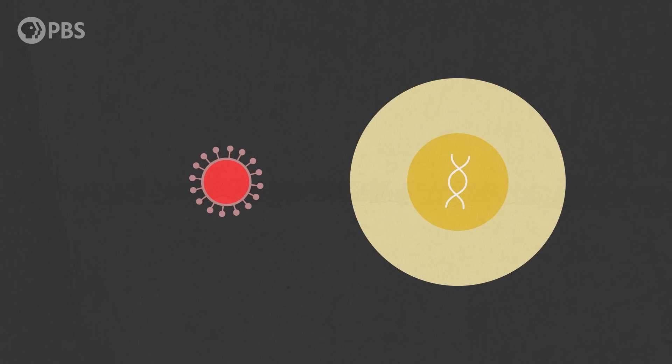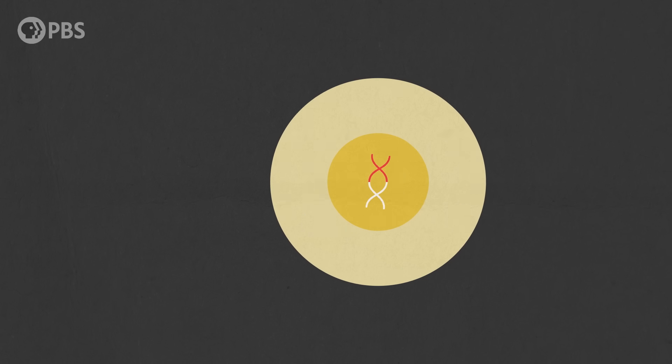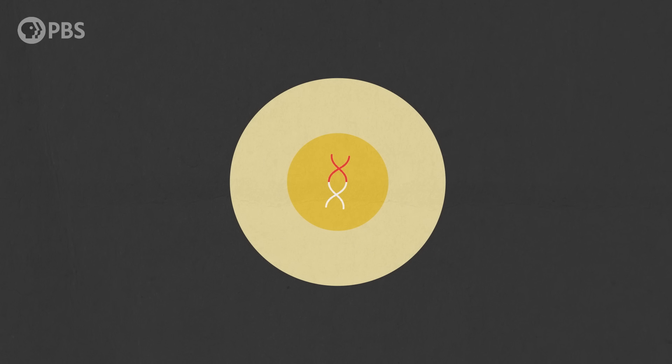Those kinds of viruses insert themselves into their host's DNA as part of their normal life cycle. And when this happens in reproductive cells, that viral sequence can be passed down from parent to offspring. Now, this doesn't happen with every viral infection. In fact, viruses embedding in the genome of their host is pretty rare.